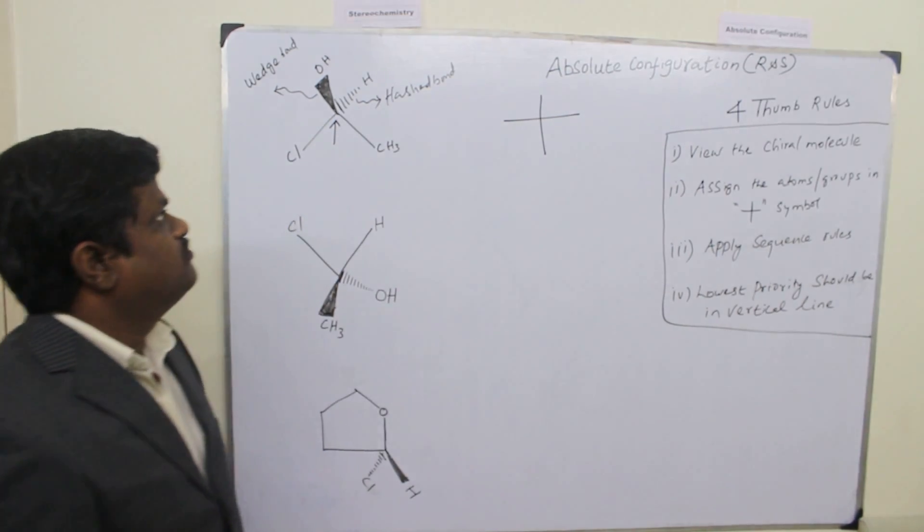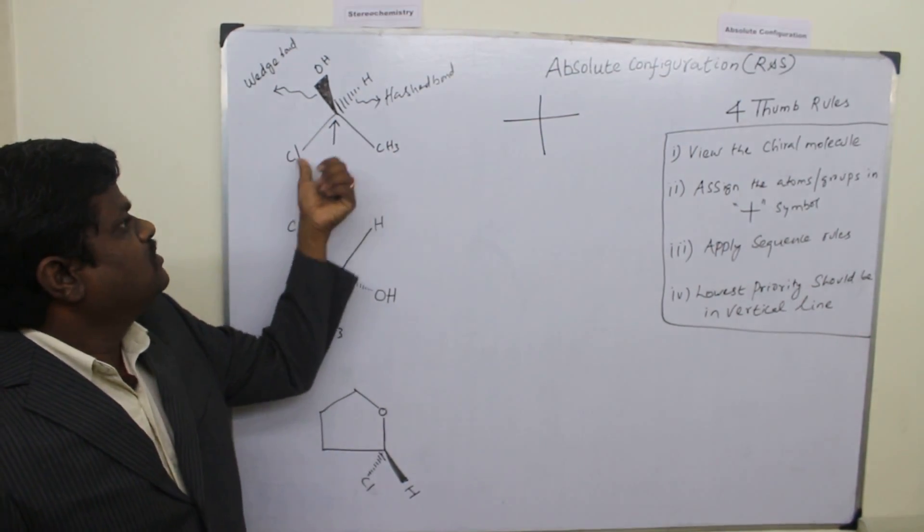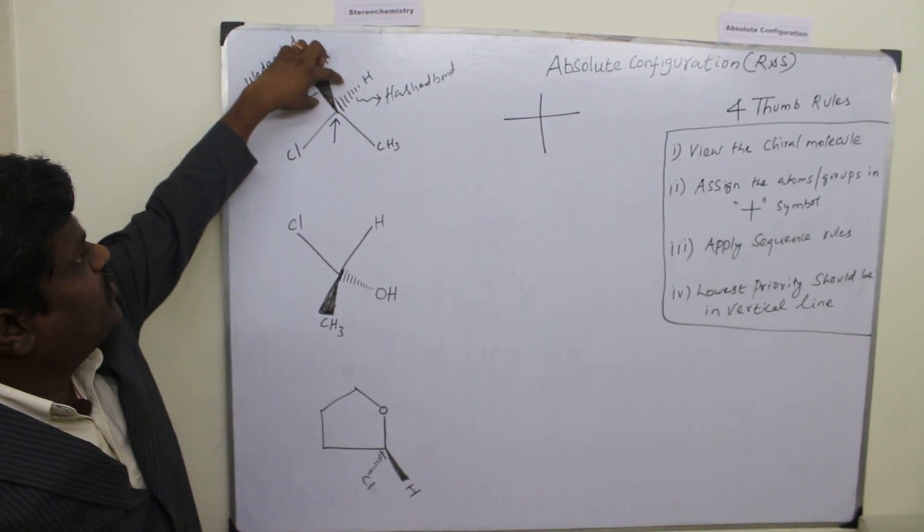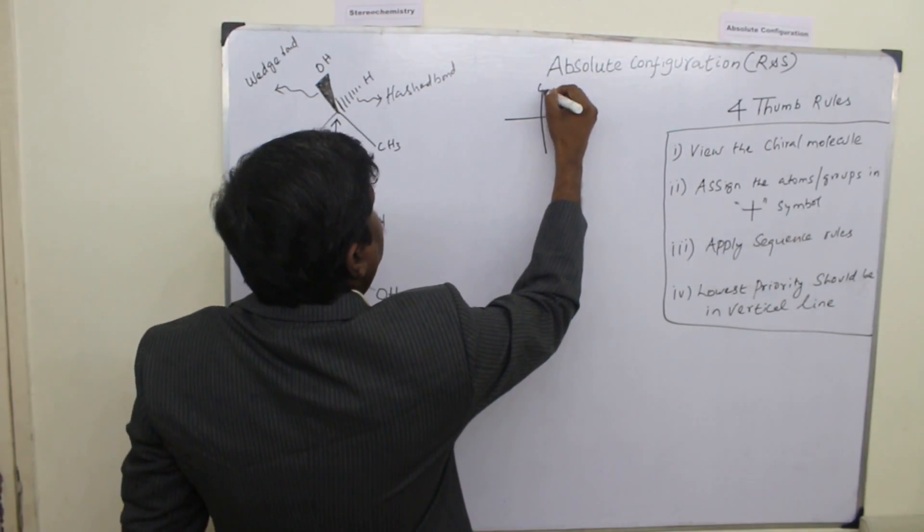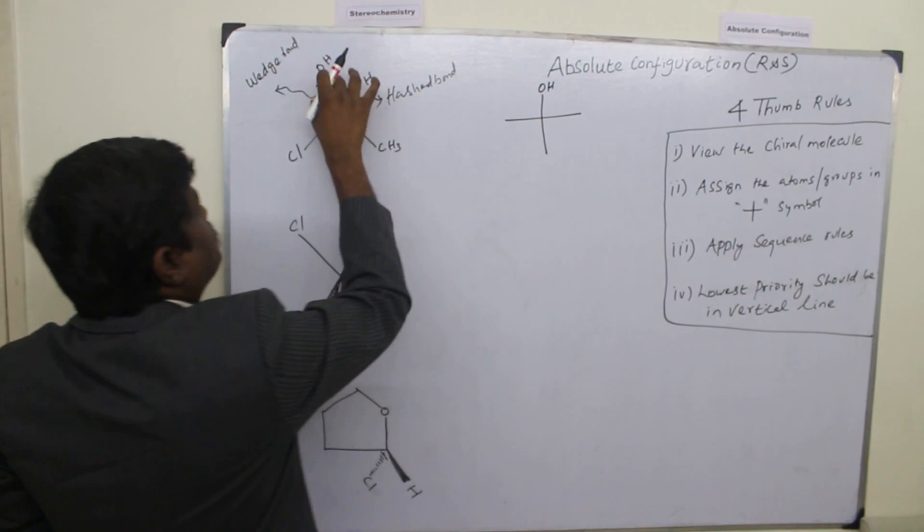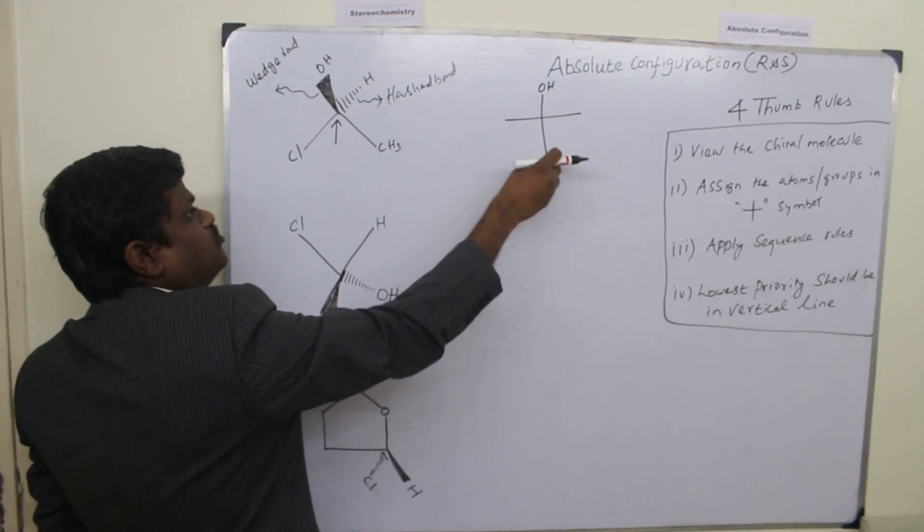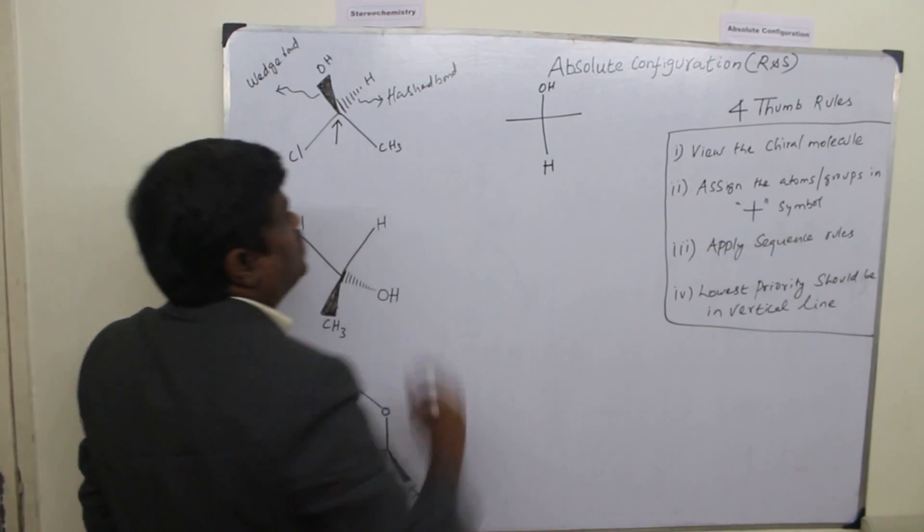After viewing this way, the second rule is to assign the atoms in the plus symbol. Pick up always the wedge bond on top of the vertical line. So this is the wedge bond. This is ash bond. Whatever the atom or group, you place on the bottom of the vertical line.